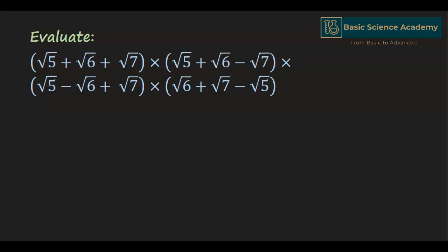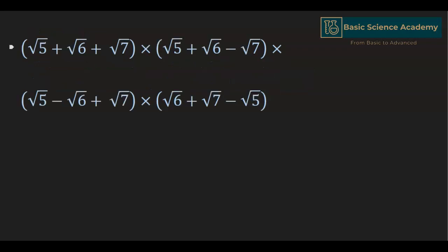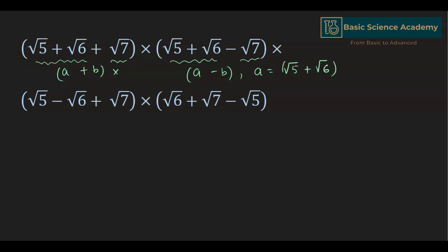In this video we are going to evaluate an expression which has four different terms. The first two terms are in the form (a+b) multiplied by (a-b), where a equals √5 plus √6 and b equals √7.